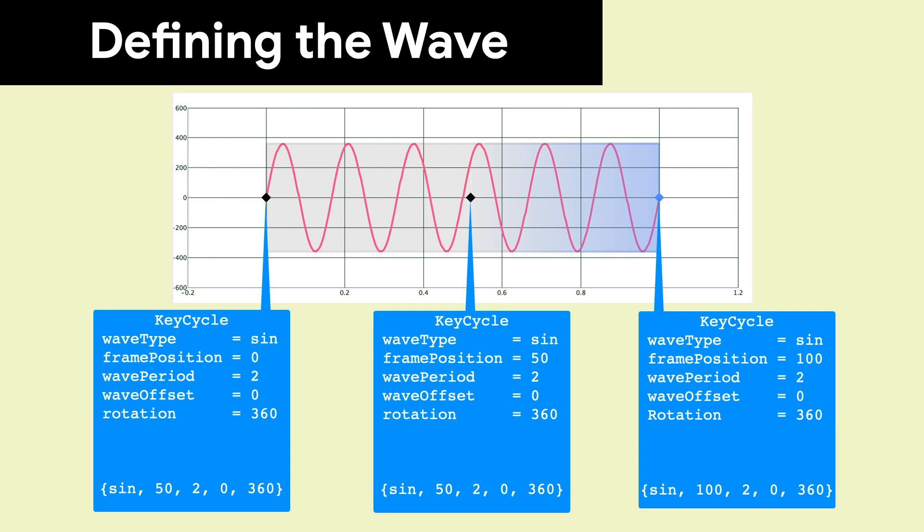Typically, you use three or more KeyCycles to define the waveform. In this case, we have created a sine wave with six waves, and it is manipulating the rotation with an amplitude of 360.